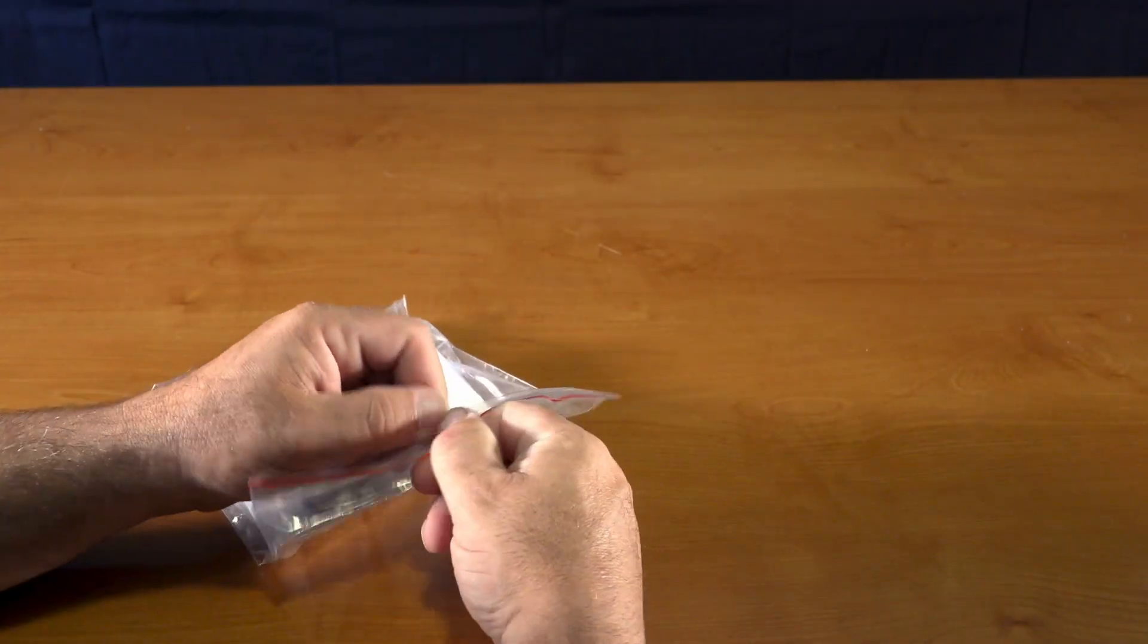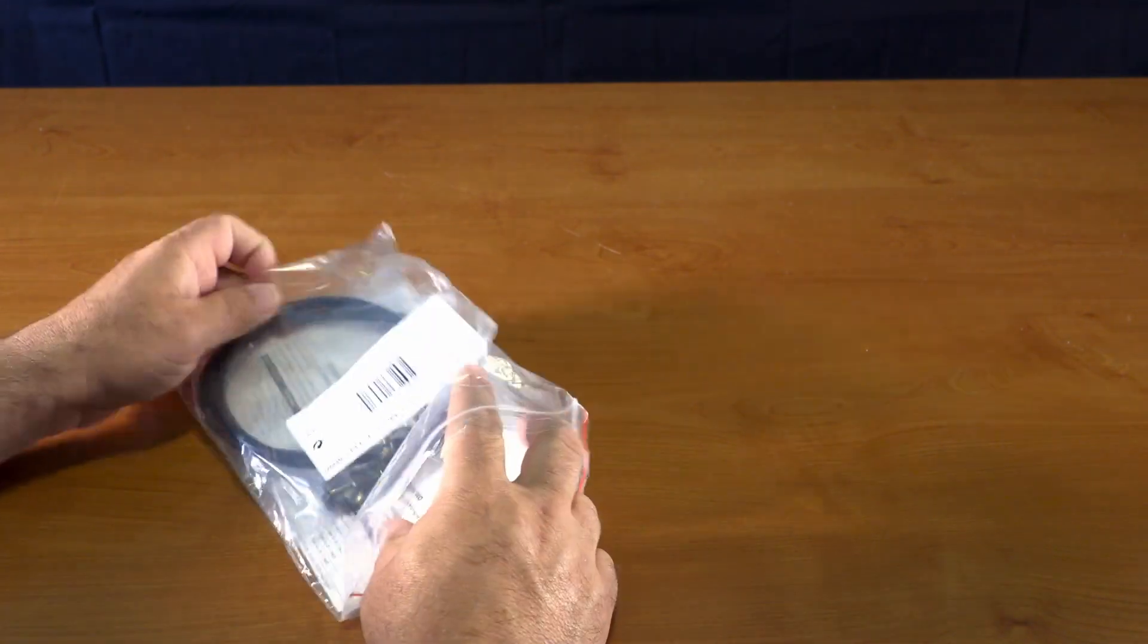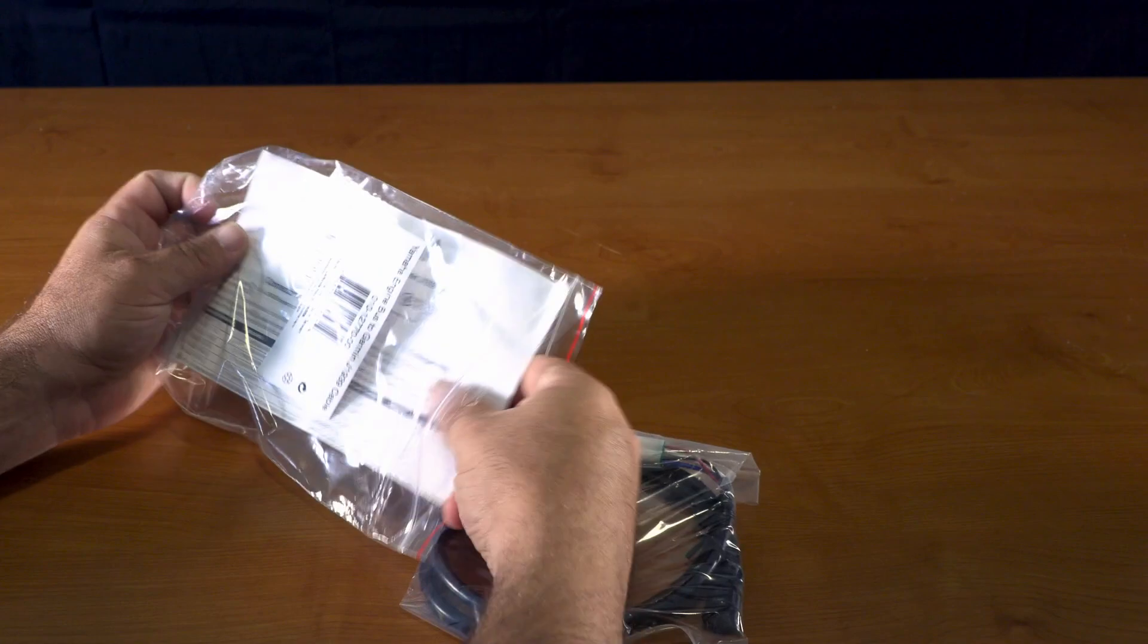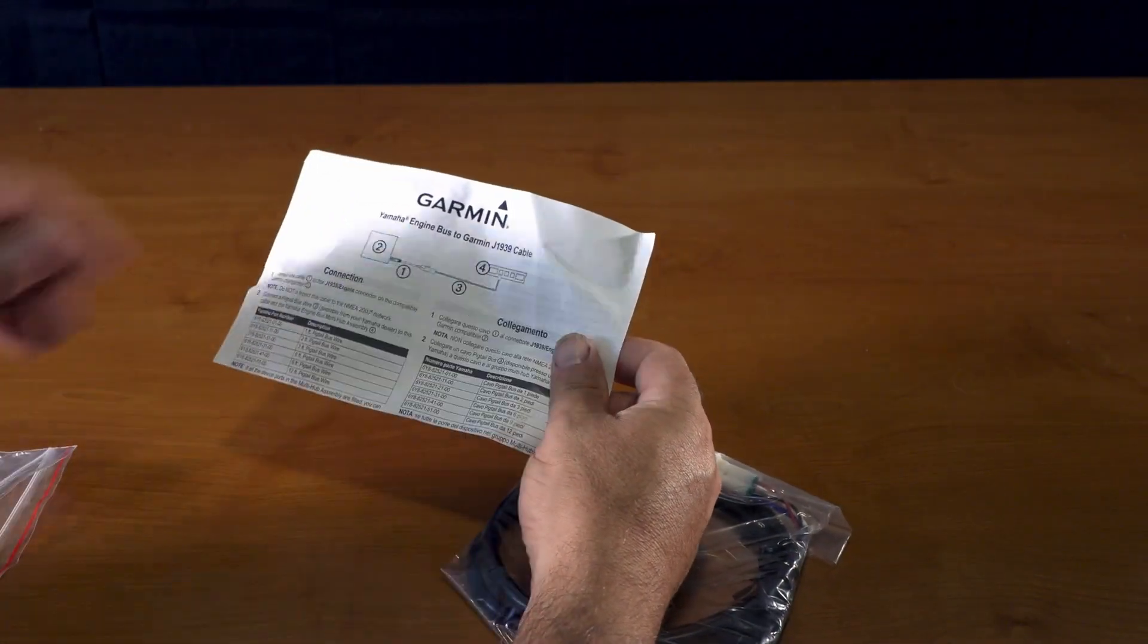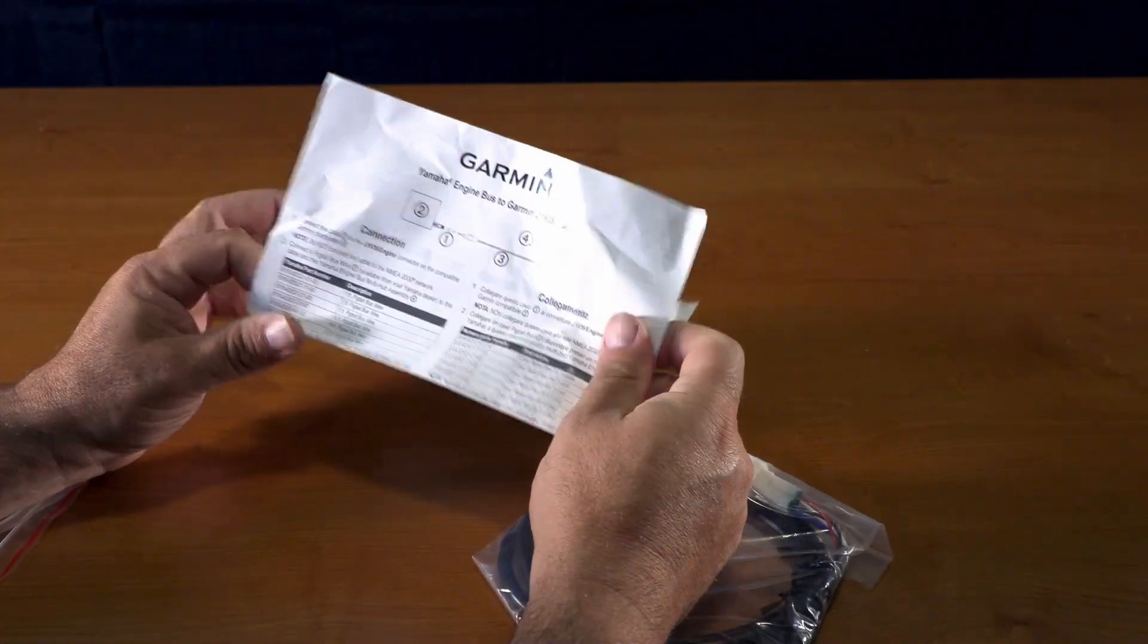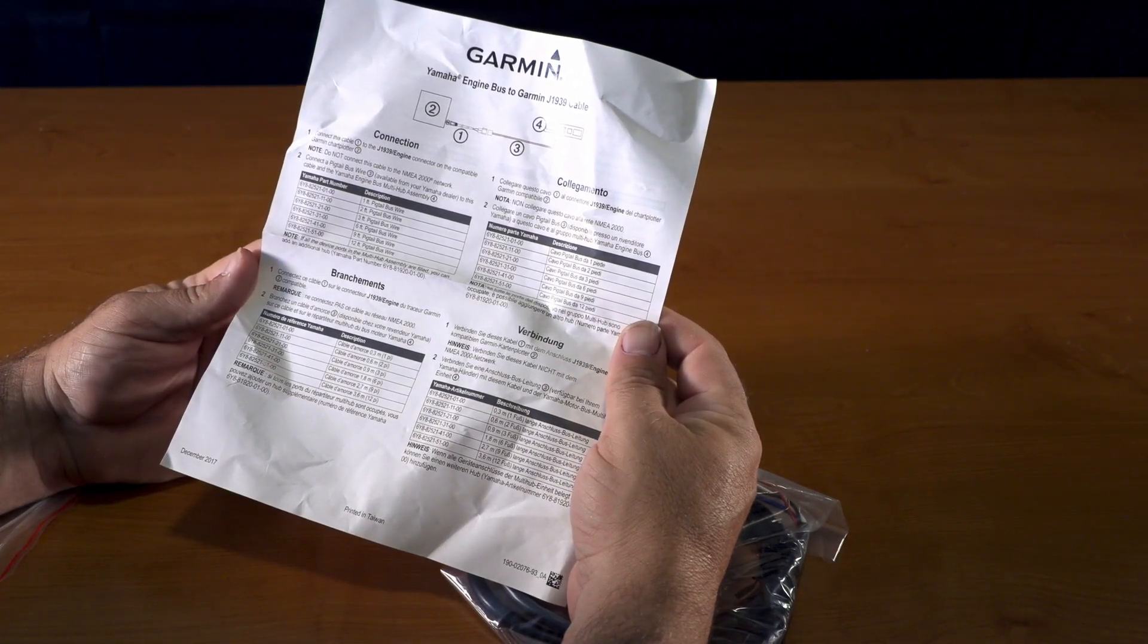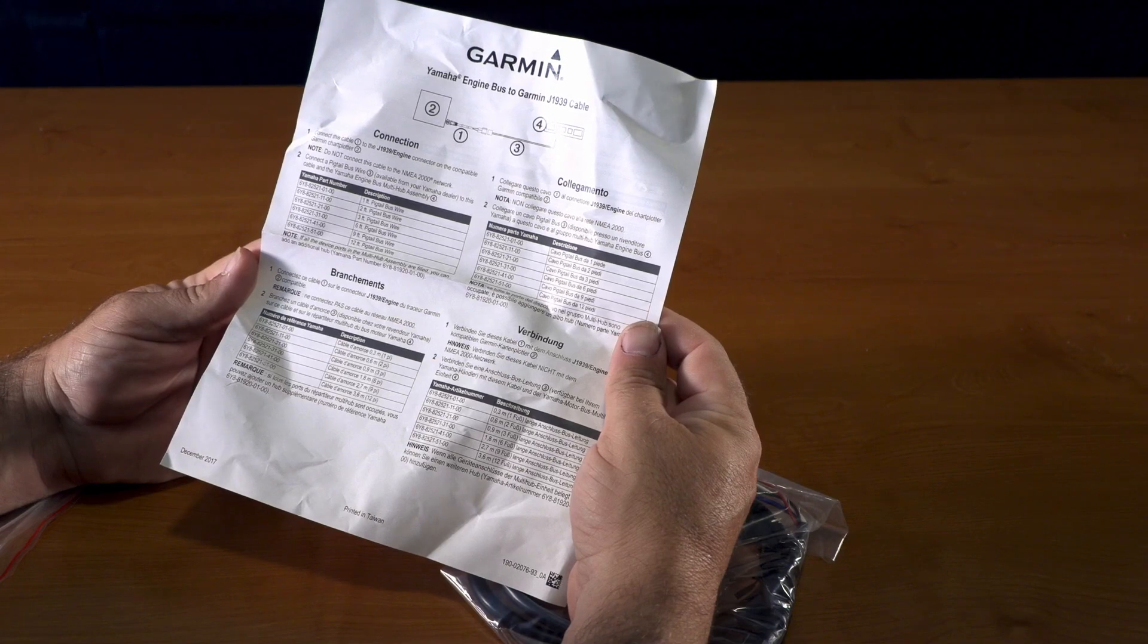This allows the integration of the Yamaha motors computer information, speedo, TAC, all that to be brought up onto your chart plotter itself. They give you a small manual with it on how to connect it to your chart plotter.